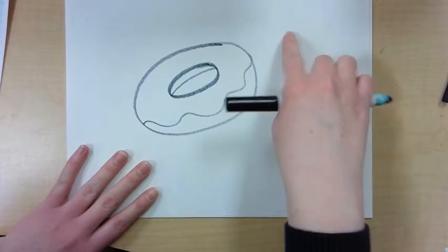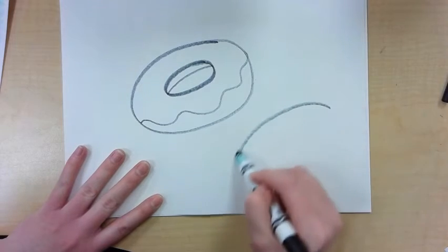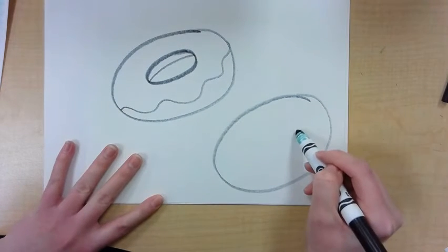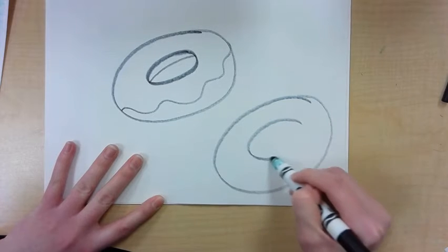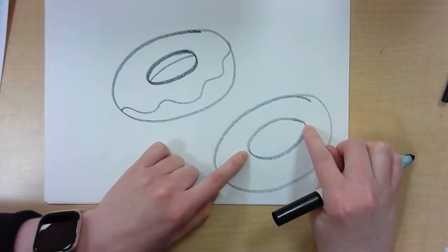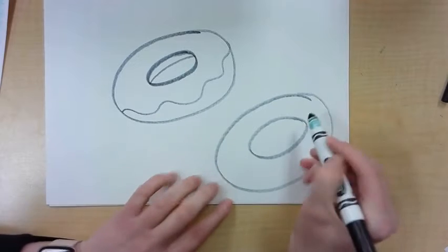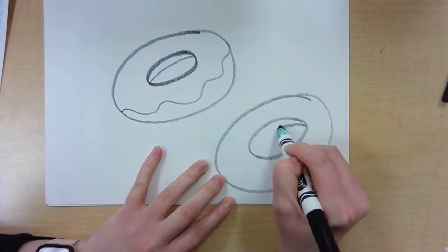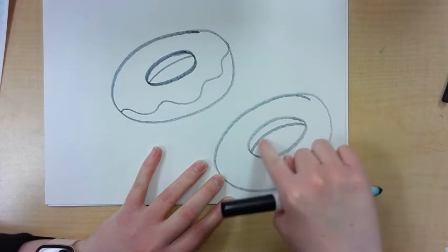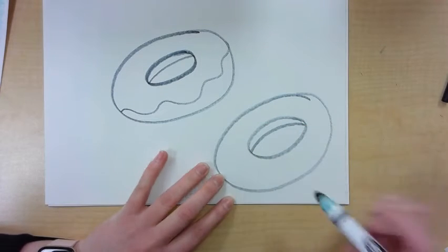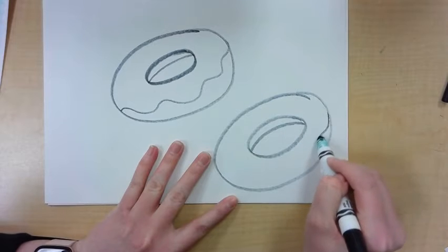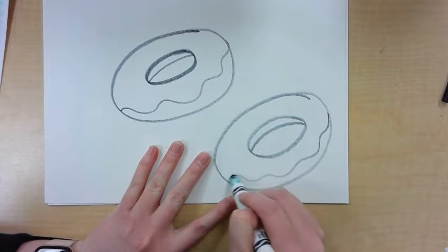So you can make another doughnut somewhere else on your paper. Start with an oval, add another oval inside of it, create a curved line in the middle. This curved line is going to copy the curve of the oval, kind of looks like a moon. And then on the big oval, make a wavy line to look like frosting.